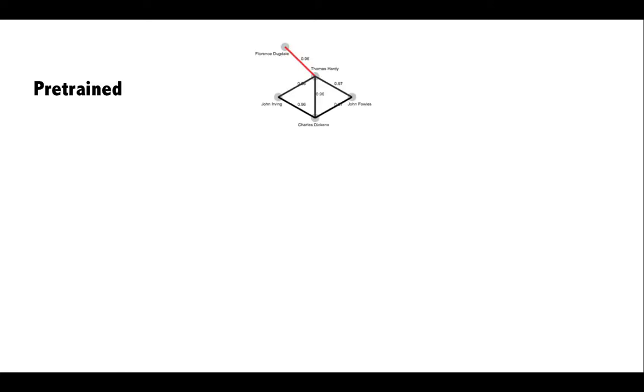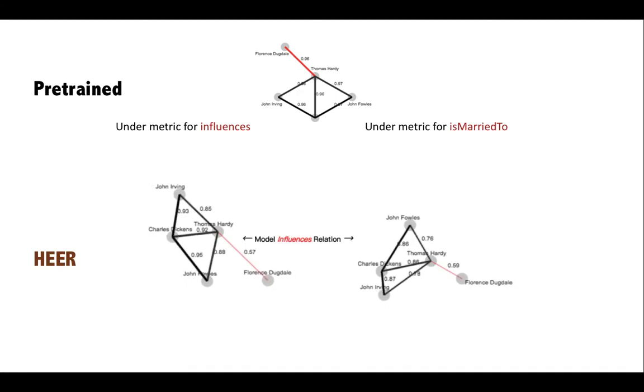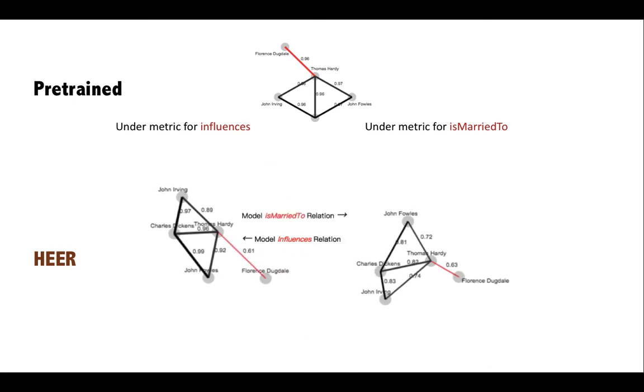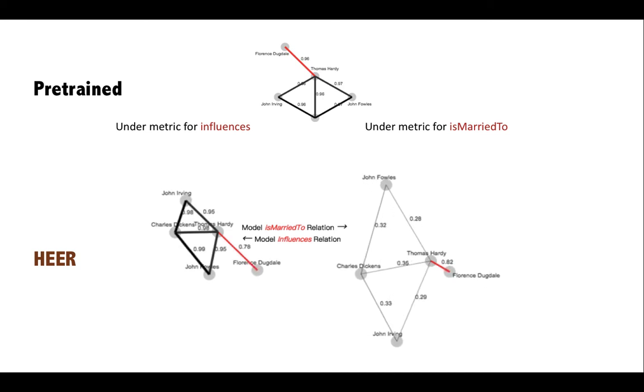Traditional network embedding algorithms fail to model multiple edge types. In HEER, during first several epochs, it manages to model influences relations. Further, it senses differences between influences and isMarriedTo.